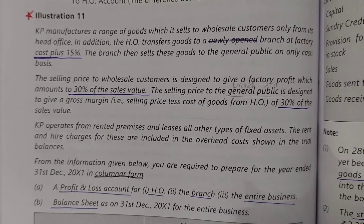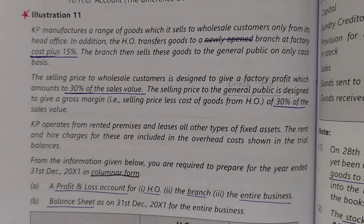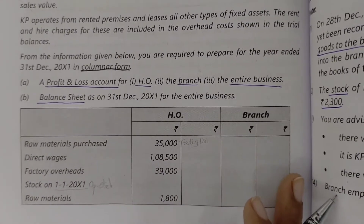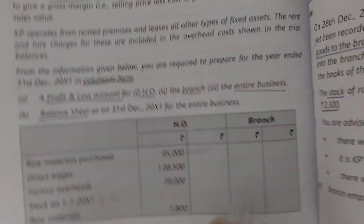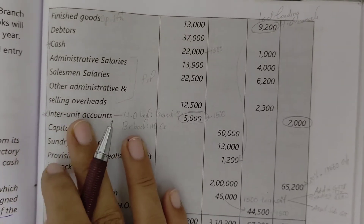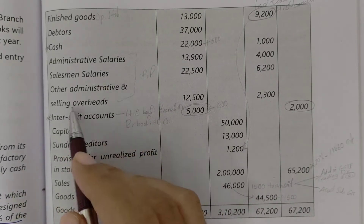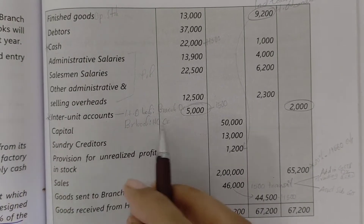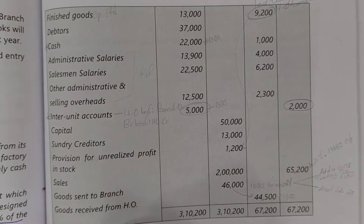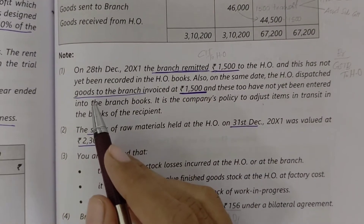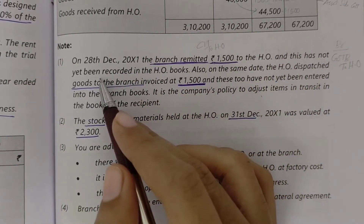The balance sheet as on 31st December is also required for the entire business in the same columnar format. The trial balance includes: raw materials purchased, direct wages, factory overhead, opening stock of raw materials and finished goods, debtors, cash, administrative salaries, salesman salaries, other administrative and selling overhead, capital, sundry creditors, provision for unrealized profit in stock, sales, goods sent to branch, and goods received from head office. On 28th December 2011, the branch remitted 1500 to the head office and this has not yet been recorded in the head office books.